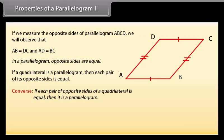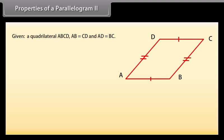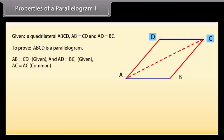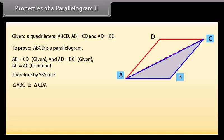The converse of this theorem says: if each pair of opposite sides of a quadrilateral is equal, then it is a parallelogram. Given quadrilateral ABCD such that AB = CD and AD = BC, we draw diagonal AC. Since AB = CD (given), AD = BC (given), and AC = AC (common), by SSS rule, triangle ABC is congruent to triangle CDA.